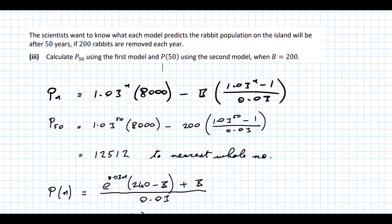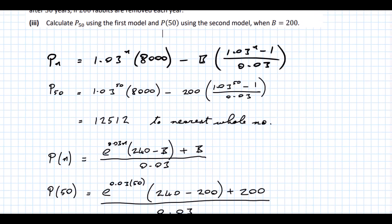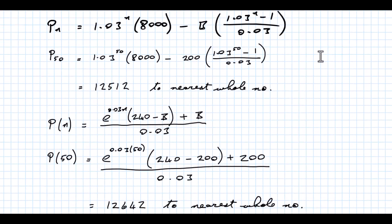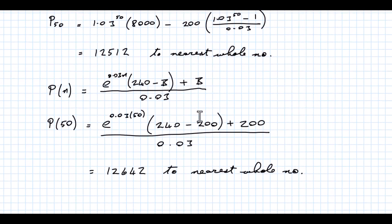The scientists want to know what each model predicts after 50 years if 200 rabbits are removed each year. Using the first model with B = 200 and n = 50, I get P(50) = 12,512 to the nearest whole number. Using the second model with the same values, I get P(50) = 12,642 — a slight difference between the two models.